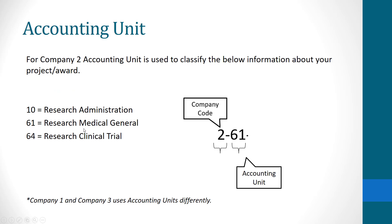For Company 2, the accounting unit is used to classify information about your project or award. The most common accounting units are 10 — Research Administration, 61 — Research Medical General, and 64 — Research Clinical Trial. It is important to note that Company 1 and Company 3 use accounting units differently.